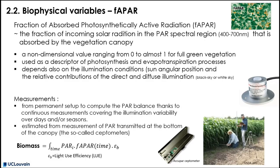FAPAR, or the fraction of absorbed photosynthetically active radiation, is defined as the fraction of incoming solar radiation in the PAR spectral region that is actually absorbed by the vegetation canopy. It is a non-dimensional value ranging from 0 to 1 for full green vegetation.